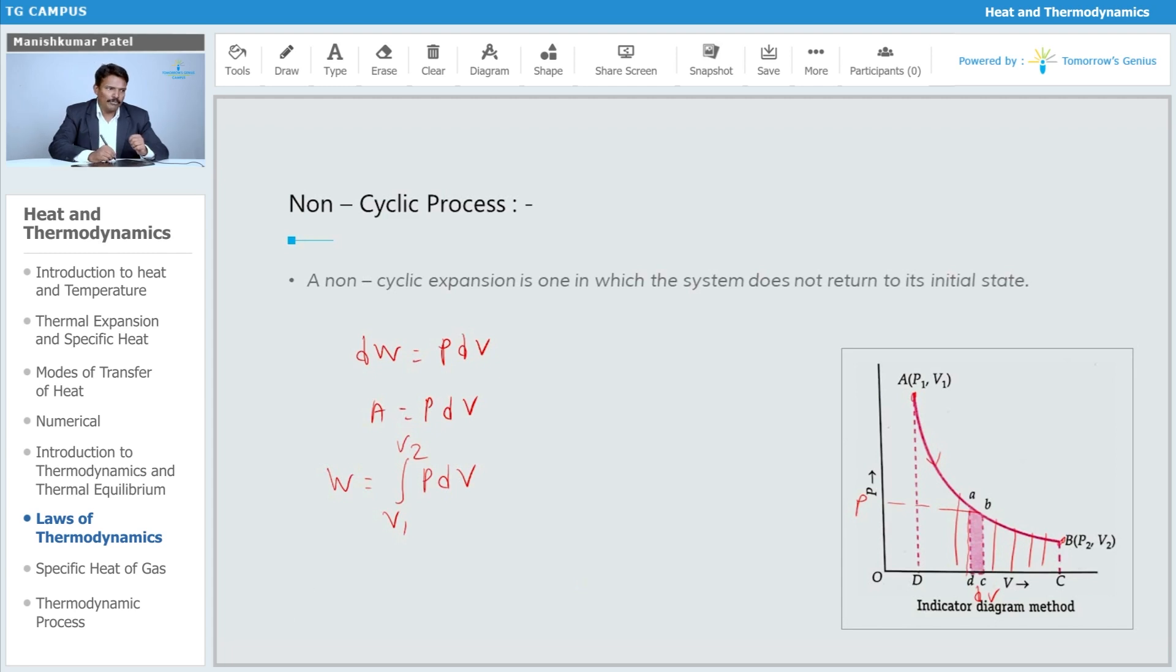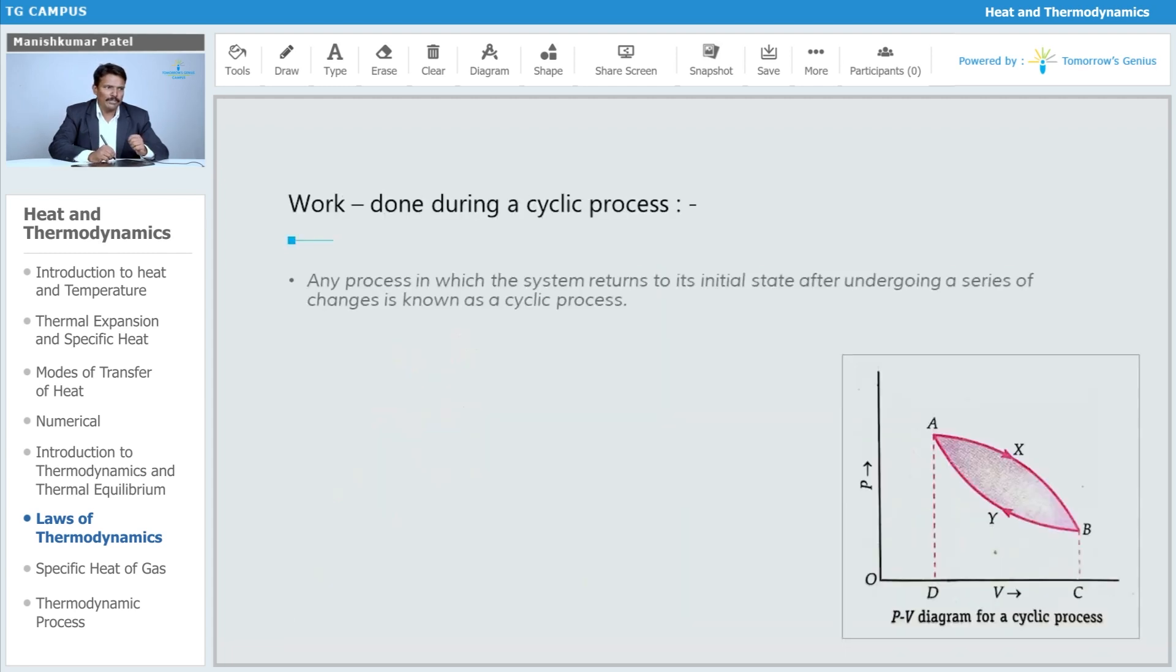What is the work done during a cyclic process? Any process in which the system returns to its initial state after undergoing a series of changes is known as a cyclic process.